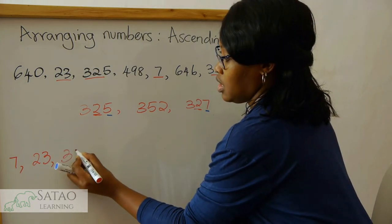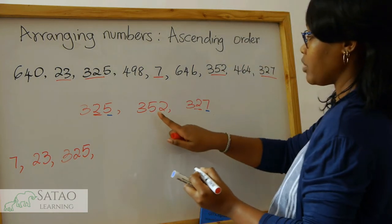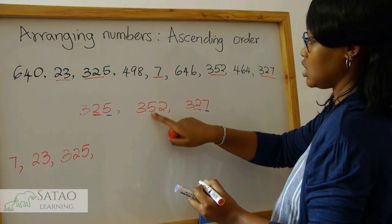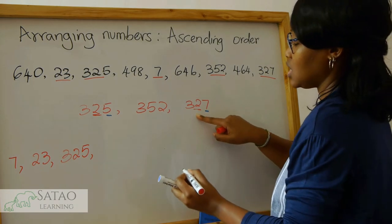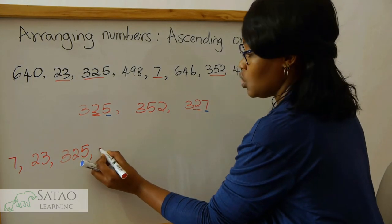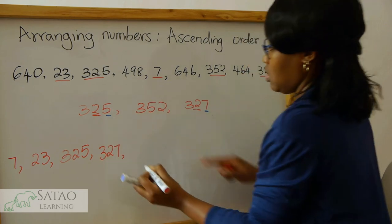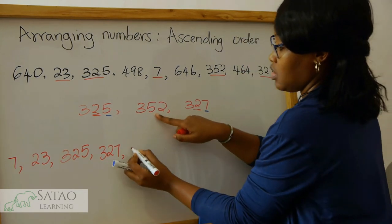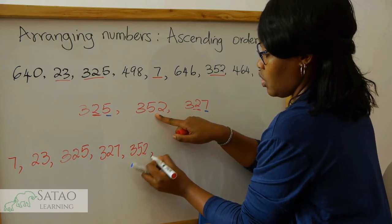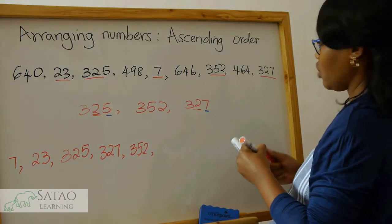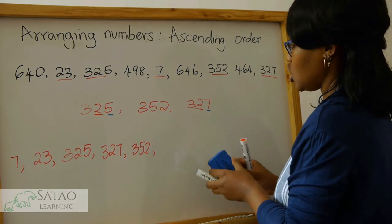Three hundred and twenty-five. The next number — because this one the second digit is bigger — three hundred and twenty-seven is less than three hundred and fifty-two. So three hundred and twenty-seven comes next, then followed by three hundred and fifty-two. After that, we look for numbers that begin with the digit four.